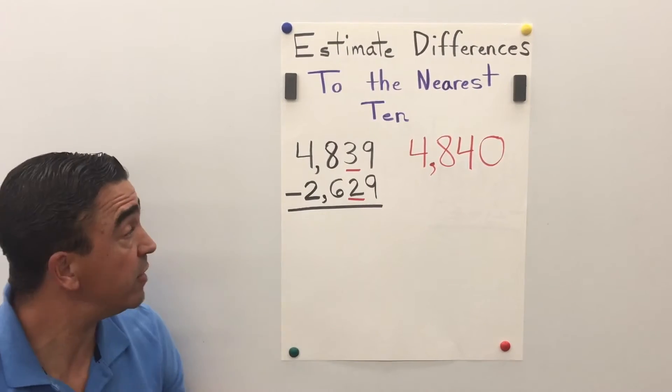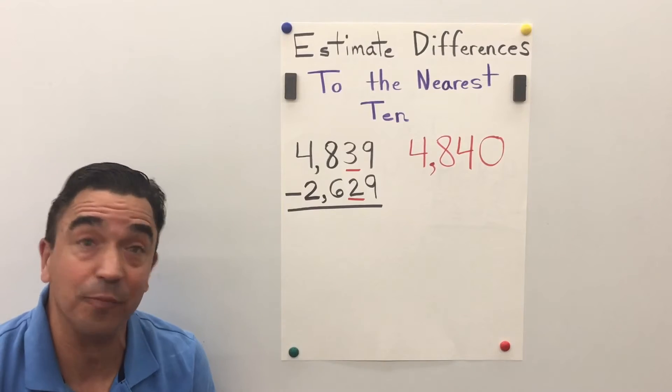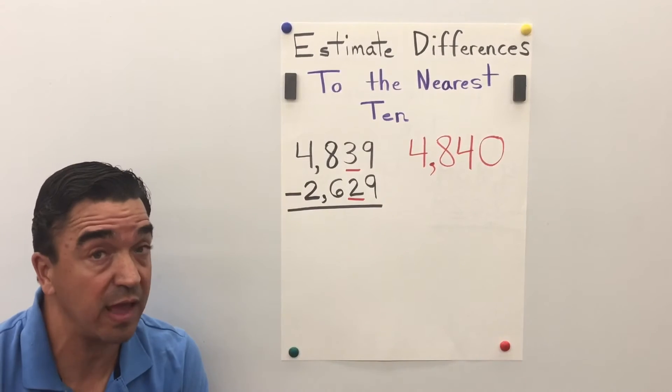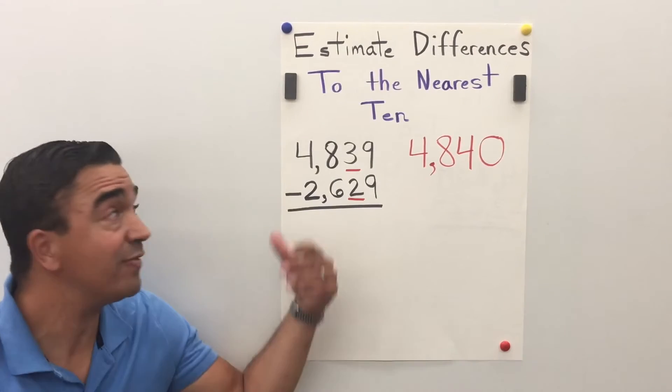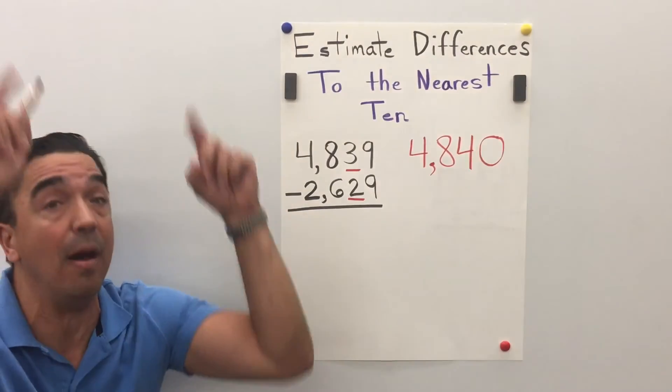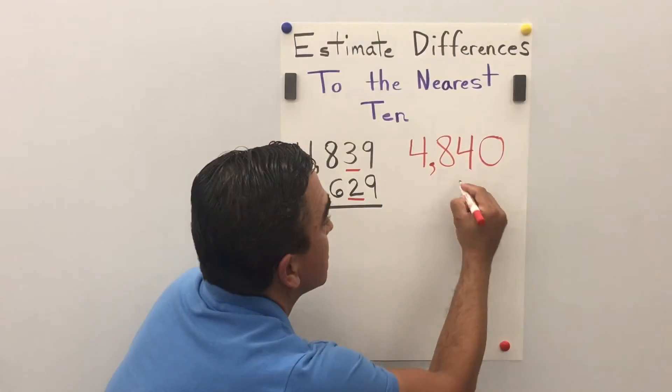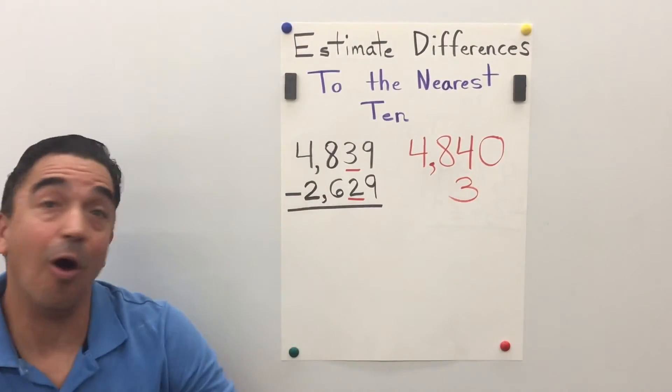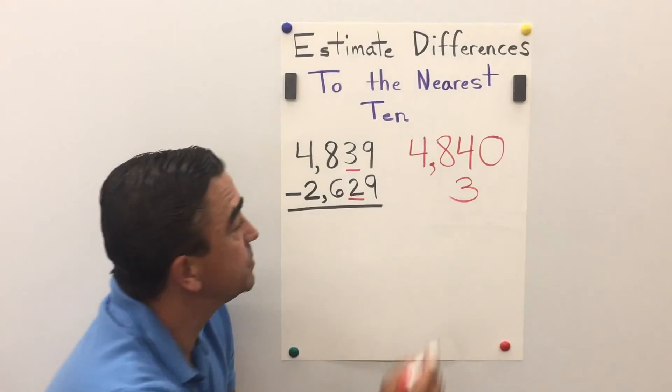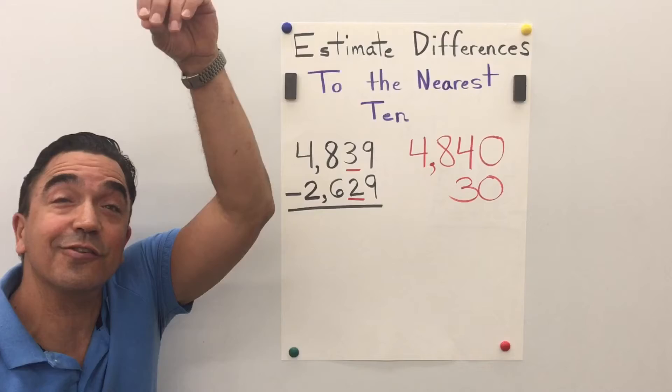Now, 2,629. The two is in the tens place, so the nine, once again in the ones place, tells the two in the tens place what to do. And it's going to tell it to go up. So the two becomes a three. All the digits after become zero. The two and six, we drop.